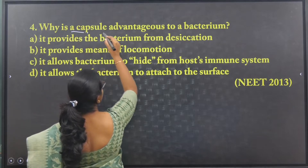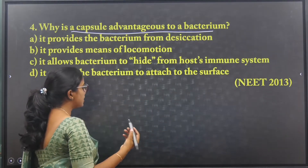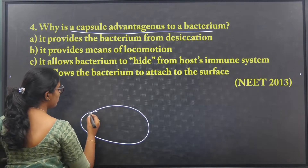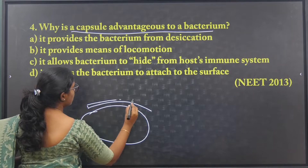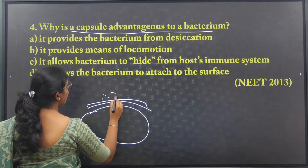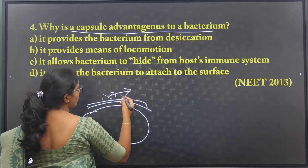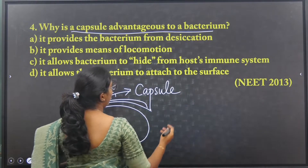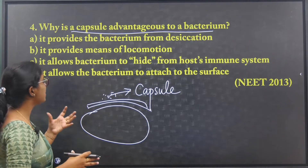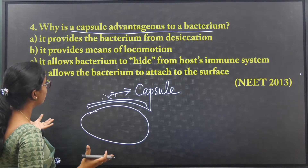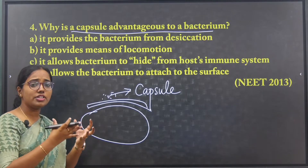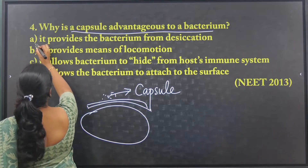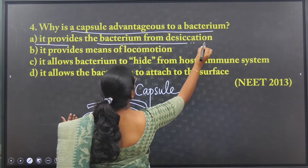Why is capsule advantageous to a bacterium? Capsule is a thick coat found outside the cell wall of bacteria. It provides protection to the bacterium from desiccation. So the capsule is located outer to the cell wall and protects against desiccation.